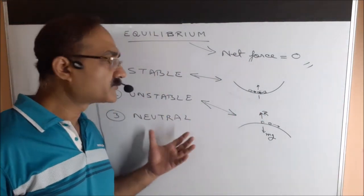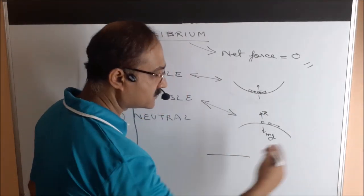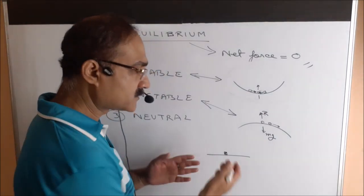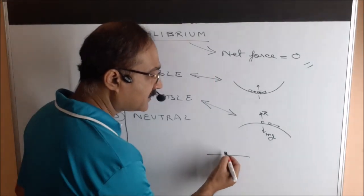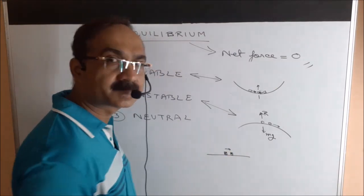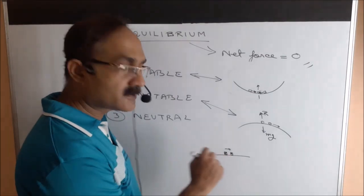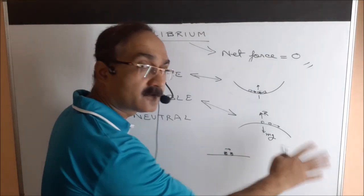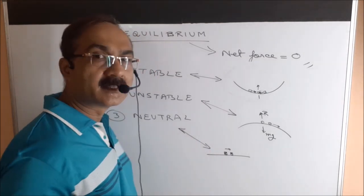The third type is neutral equilibrium. Say we have a horizontal surface with a body on it — again, Mg equals R, net force zero, body is in equilibrium. Now if I displace it a little bit and let go, it will stay there. It will not come back, and it will not go further away. This type of equilibrium is called neutral equilibrium.